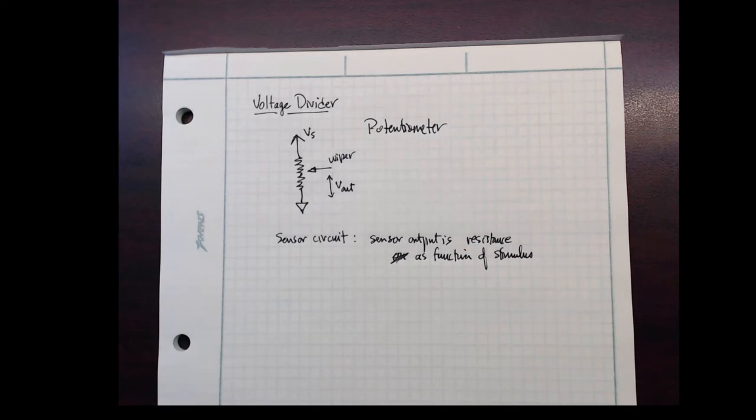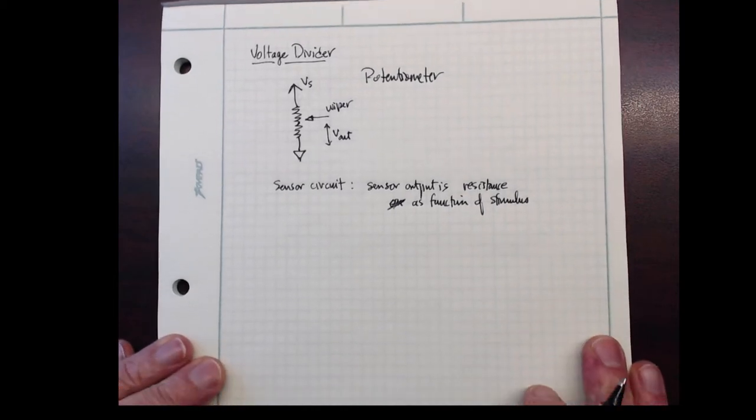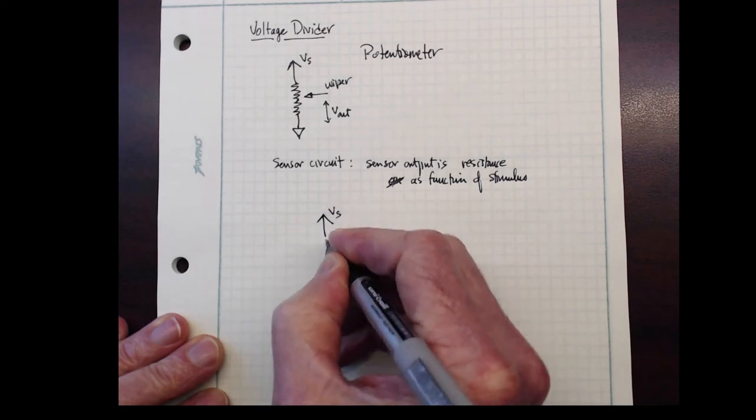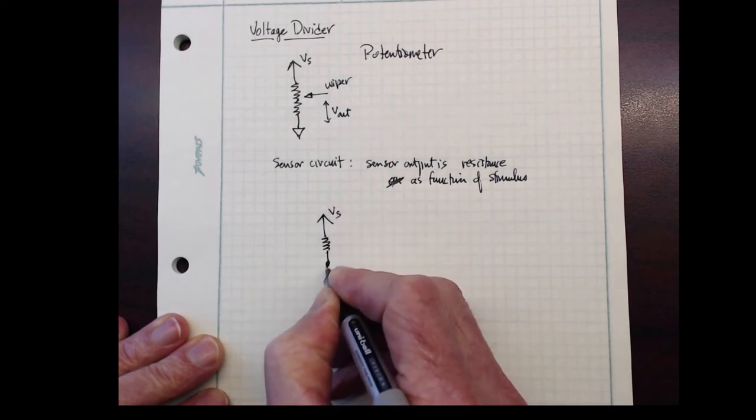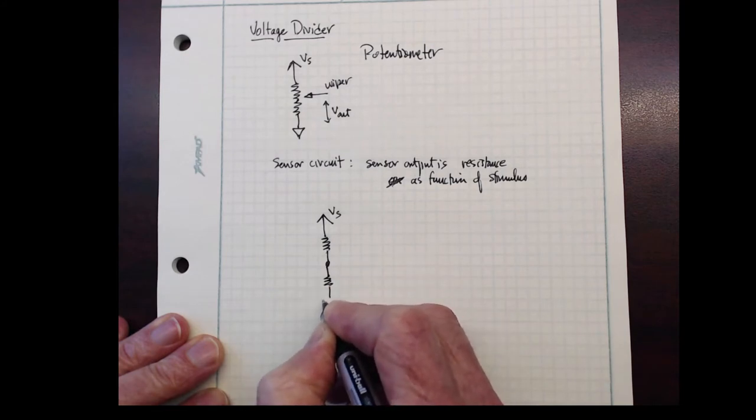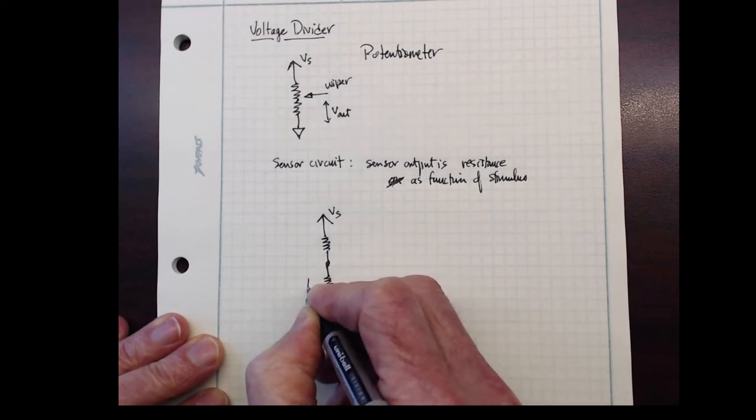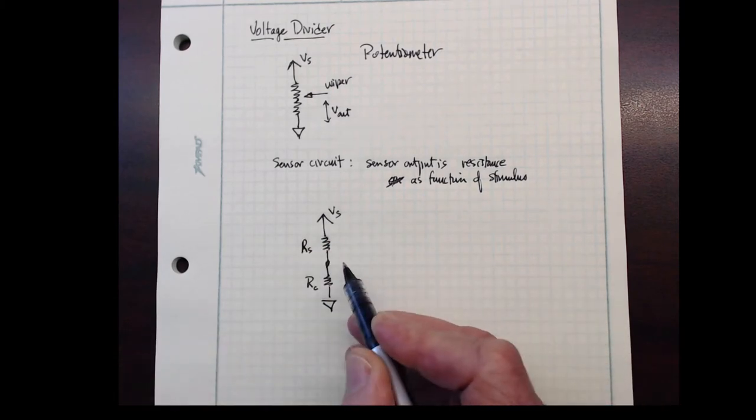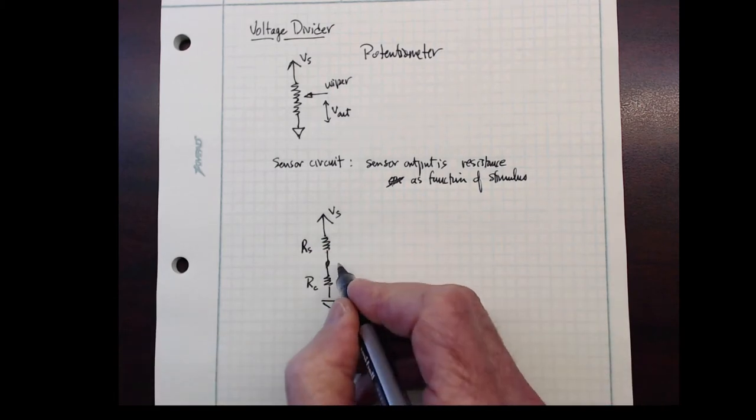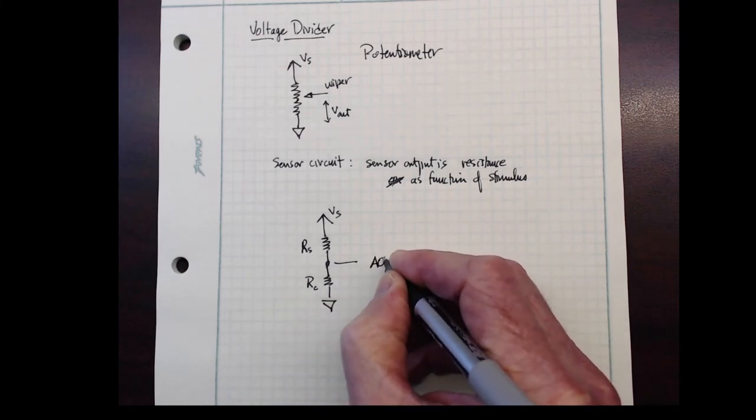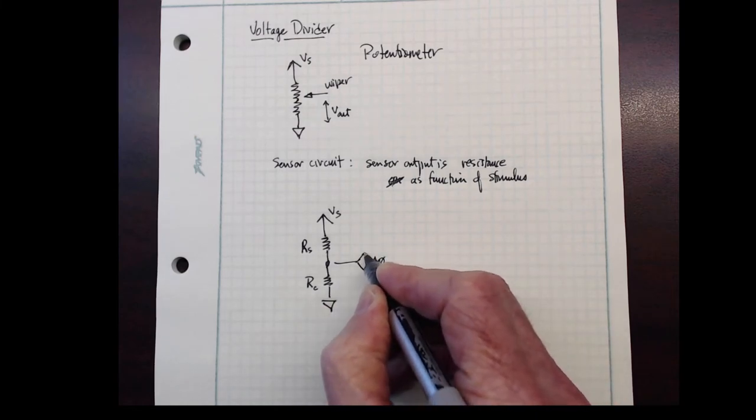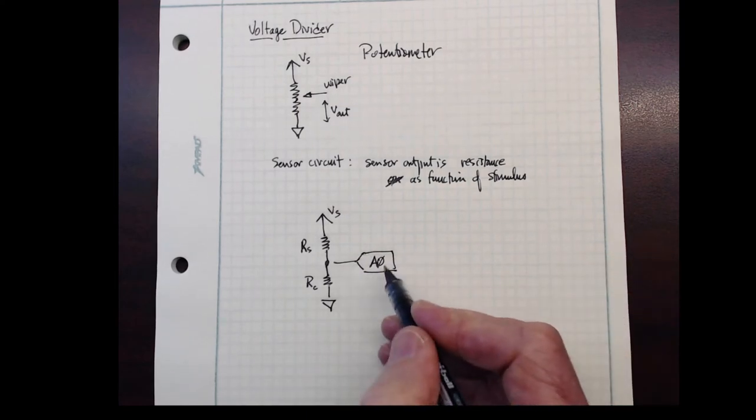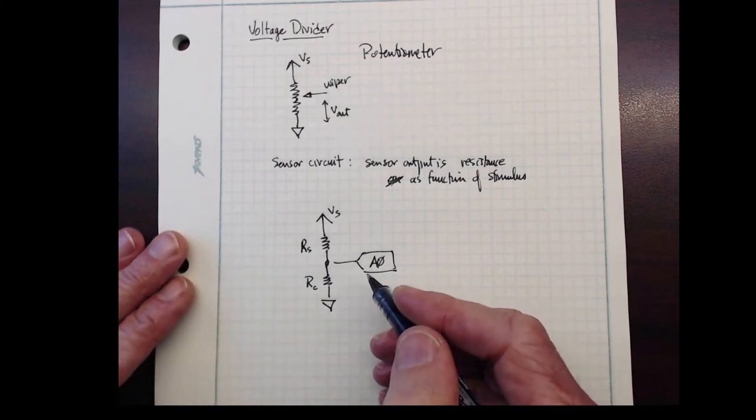In that sensor circuit, we would have the same Vs now connected to two discrete resistors. I'm going to call the bottom resistor RC and the top resistor RS. The RS is the sensor, and then we're going to connect this in a typical application on an Arduino to an analog input. I'm calling it A0, but it could be any analog input pin. So this is basically a voltage measurement, an analog to digital converter.